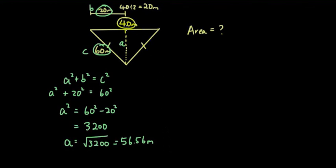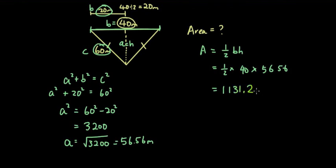Okay, so to get the area of this triangle, it'll simply be half times base times height. So that's half times—now the base of this whole triangle is still 40. So base is equal to 40. And the height is equal to the A value which we have found, 56.56. So put all that into the calculator. And the answer is 1131.2 meters squared.